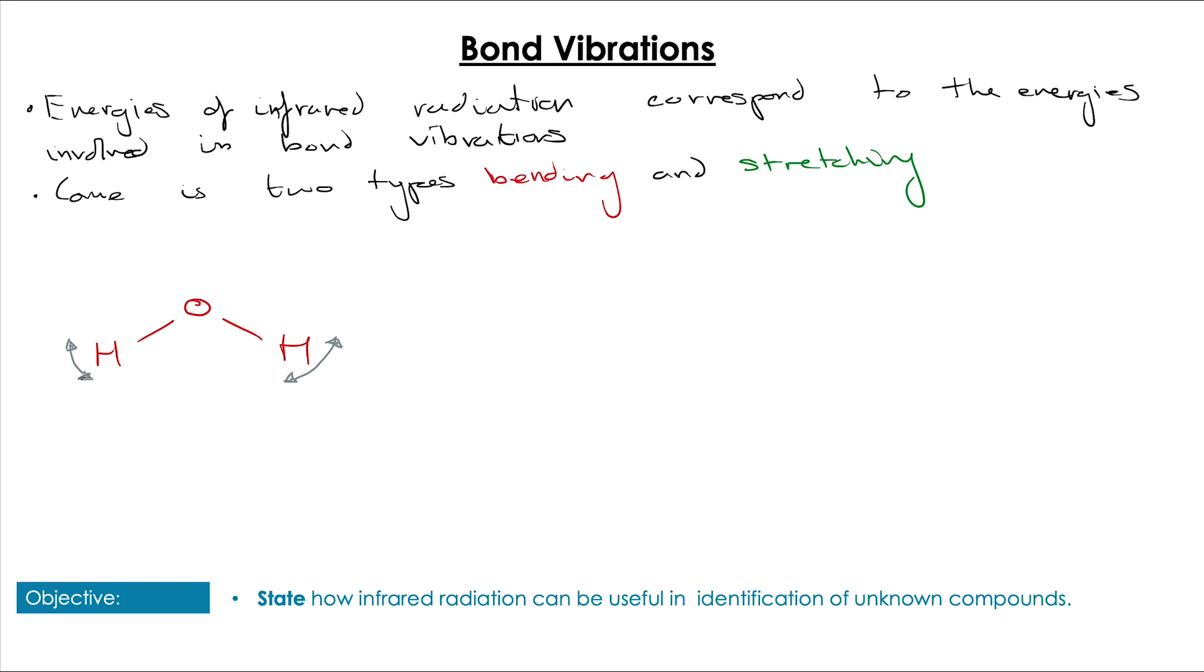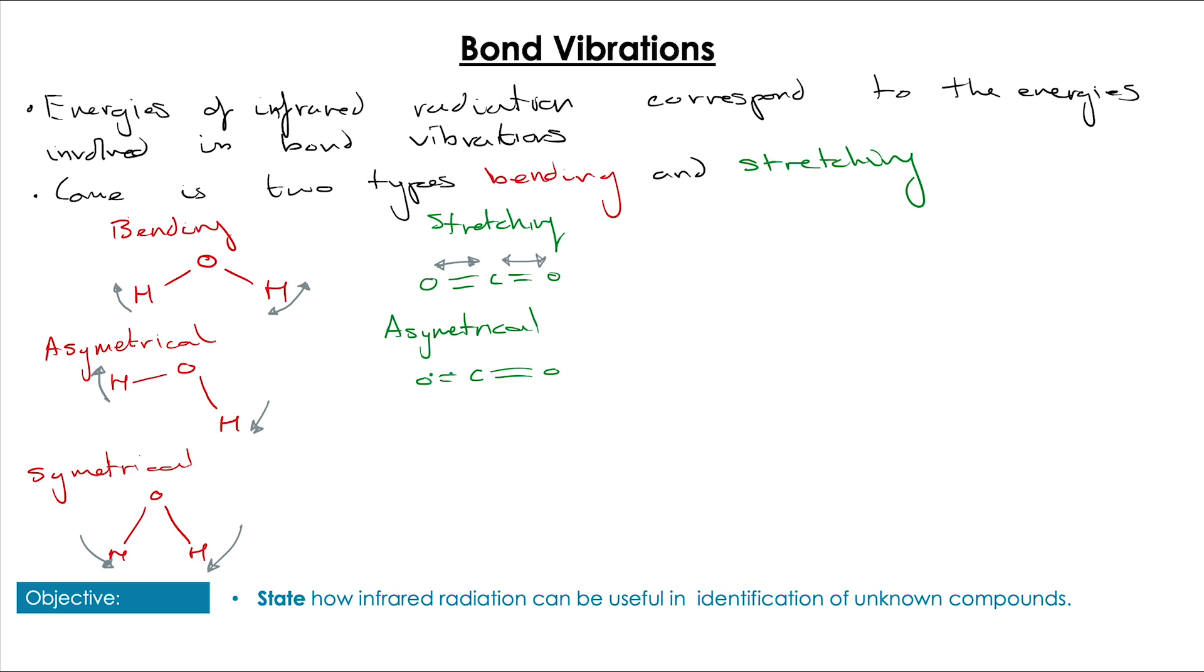The bending type is where the molecules bonds oscillate on an angle. We can have asymmetrical where they bend in opposite directions or we can have symmetrical where they kind of bounce forward and backwards together. We can also have stretching in which the bonds elongate and compress. Again this can come in an asymmetrical form or the bonds in the molecule can symmetrically elongate and compress.